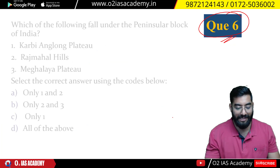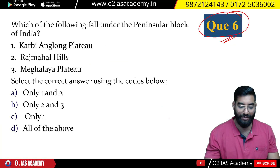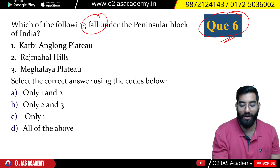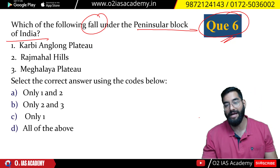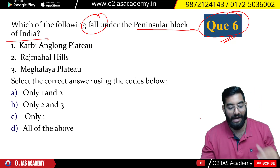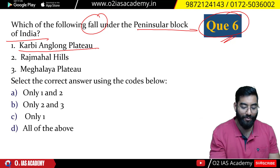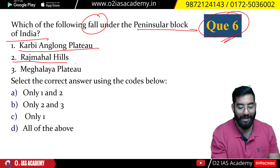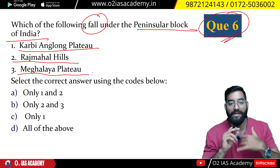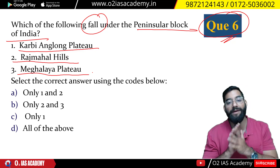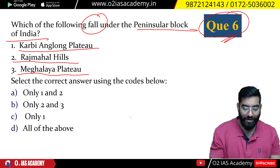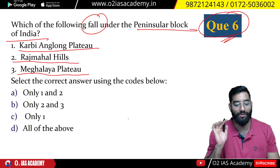Question number 6: Which of the following fall under the peninsular block of India? The options are Karbi Anglong Plateau, Rajmahal Hills, and Meghalaya Plateau. Which of these plateaus or hills are part of the peninsular block? Pause the video and give your answer quickly.